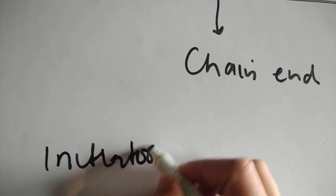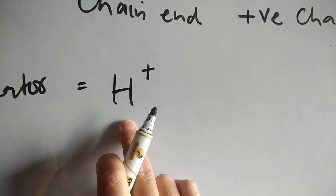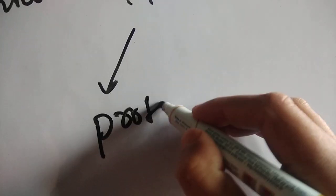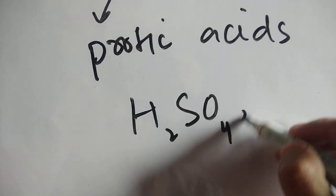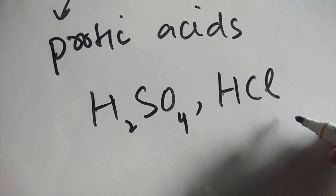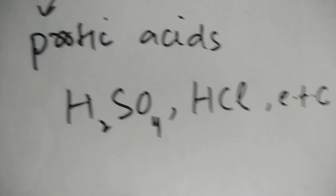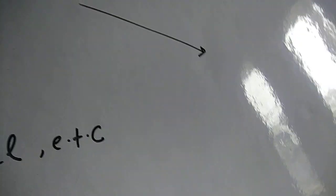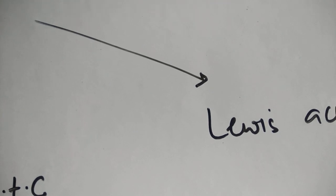The initiator is H⁺, and that proton can be generated from protic acids like sulfuric acid (H₂SO₄) and hydrochloric acid (HCl), and so on. That H⁺ can be generated from these acids by simple ionization — a dissociation process. Alternatively, H⁺ can be generated from Lewis acids like BF₃.